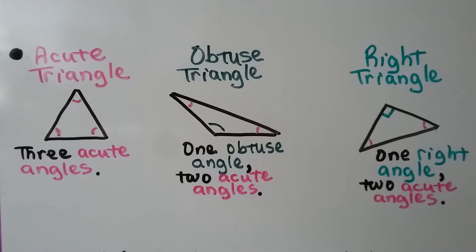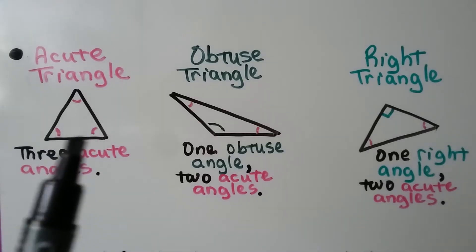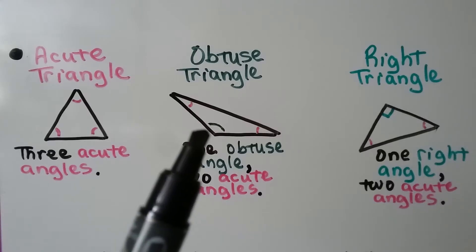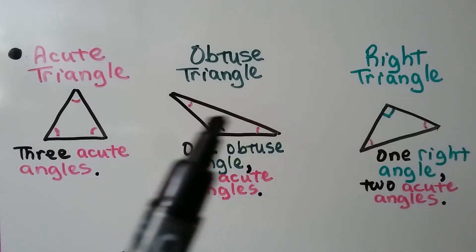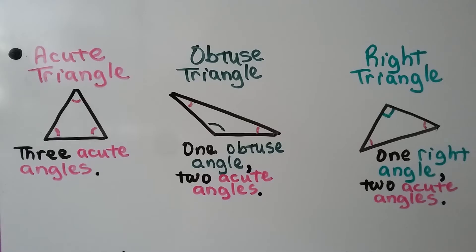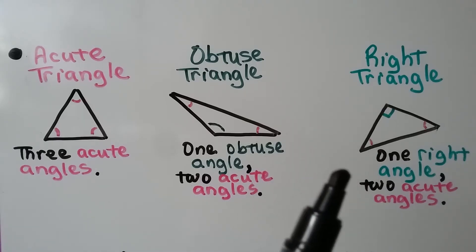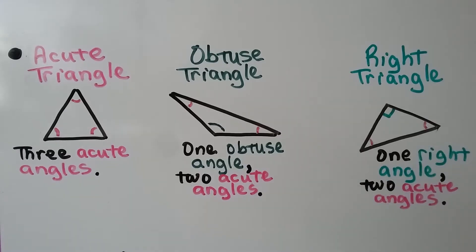An acute triangle has three acute angles — three little cute angles. An obtuse triangle has one obtuse angle and two acute angles. A right triangle has one right angle — we can see the little box — and it also has two acute angles.